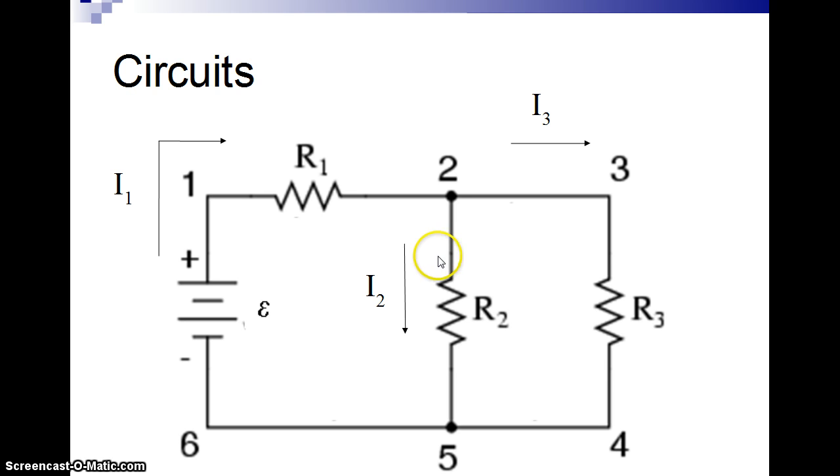And then I'm also going to do another loop. Now I have two choices to do my other loop. I can either go two, three, four, five, back to two, or I can go six, one, two, three, four, five, six, all the way around the outside. It doesn't really matter which one we choose, but that's the one I'm going to choose for now.